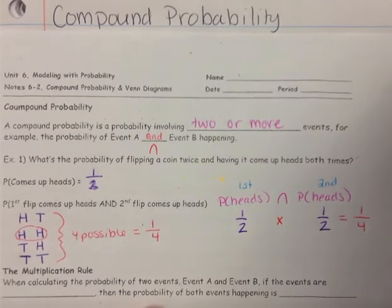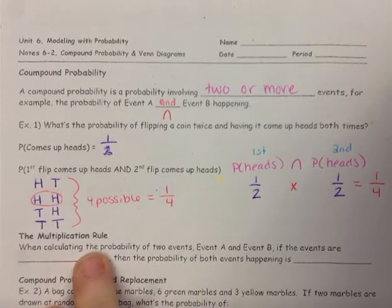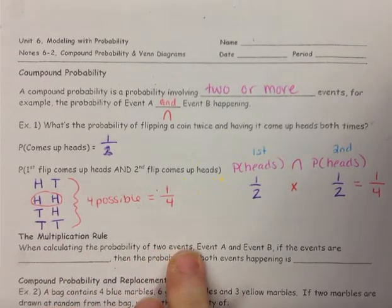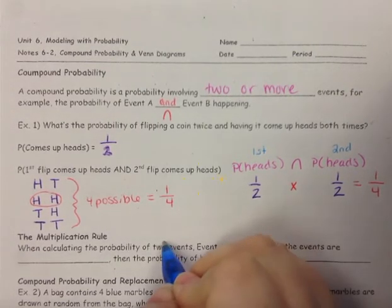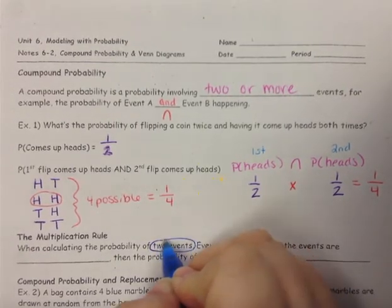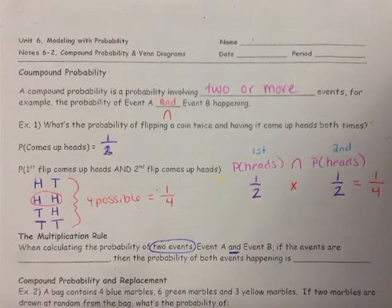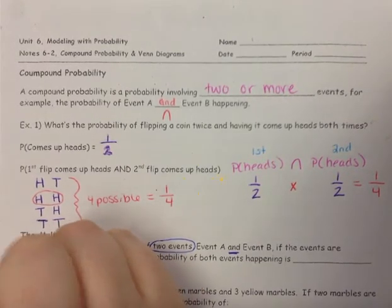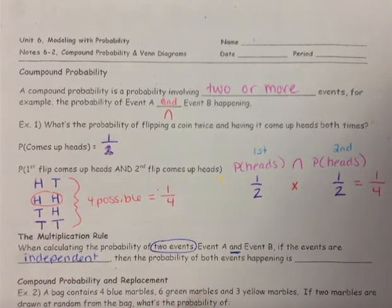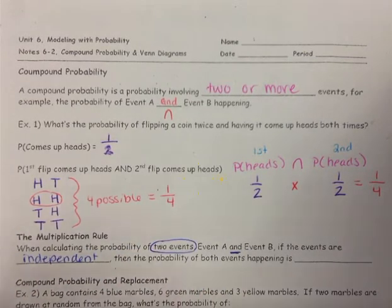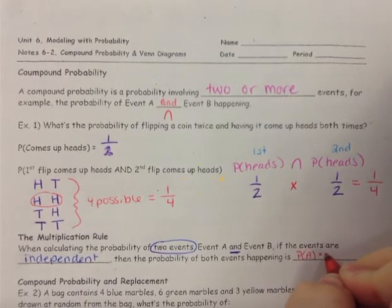This is called the multiplication rule. The multiplication rule states that when calculating the probability of two events — event A and event B — if the events are independent, then the probability of both events happening is P of A times P of B.